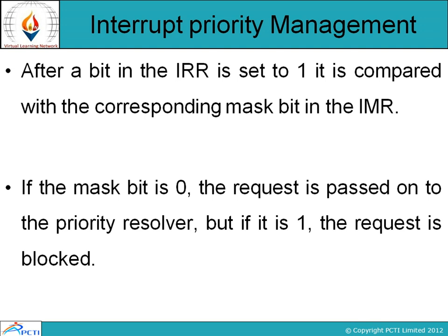Now, interrupt priority management. After a bit in the IRR is set to 1, it is compared with the corresponding mask bit in the IMR. If the mask bit is 0, the request is passed on to the priority resolver. But if it is 1, the request is blocked. The priority resolver is a mechanism through which we can assign priority to different tasks.